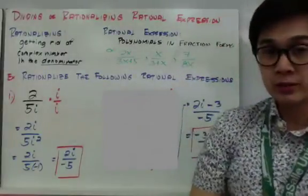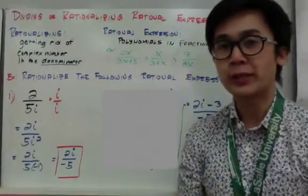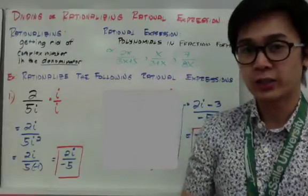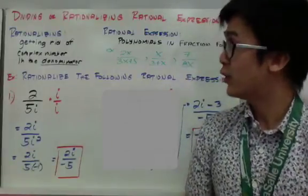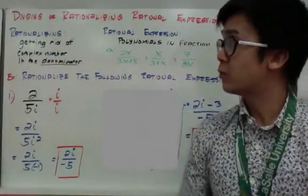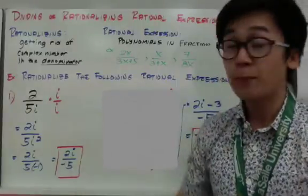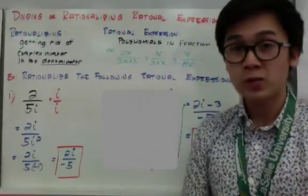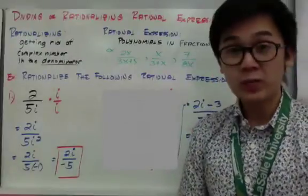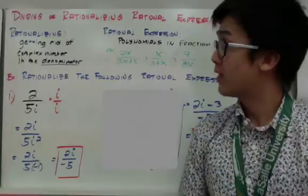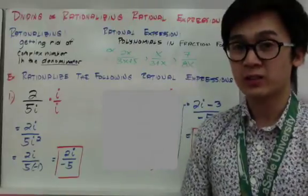In our examples we are going to rationalize rational expressions. There are two mathematical terms we're using today: rationalizing and rational expressions. When we hear the word rationalizing in mathematics, it means we're trying to get rid of the complex number or radical expression in the denominator. Today we'll focus on complex numbers, so when we rationalize, we get rid of the complex number in the denominator.